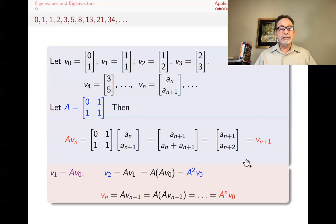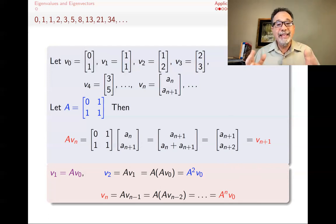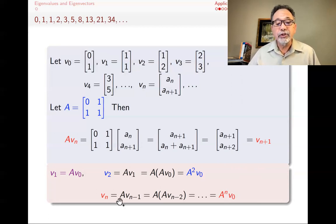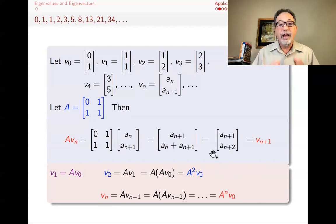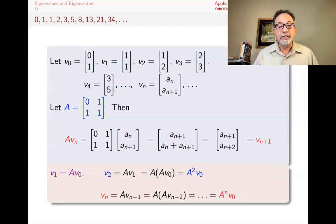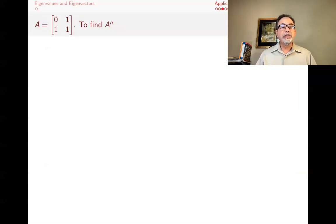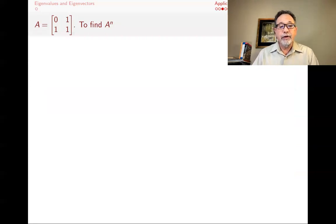So if I take this matrix A and raise it to the power n, then multiply by V0 — which is just (0, 1) — I get Vn. That's the plan: find the nth power of this matrix A as a way of finding what Vn is. So let's get started. This is the matrix A = [[0,1],[1,1]], and I want to find An, so I diagonalize A first.